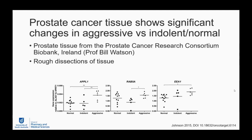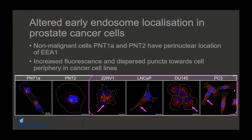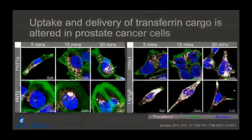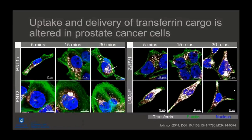We wanted to know what endosomal processes might be altered in prostate cancer that could affect pathogenesis. Much like lysosomes, early endosomes are also mispositioned — EEA1 shows perinuclear localization in non-malignant cells, while in cancer cells we see greater pericellular distribution of these compartments. Functionally, we measured differences using transferrin ligand uptake: in non-malignant cells, transferrin migrates to a perinuclear region within 30 minutes, whereas in cancer cells it remains dispersed throughout, particularly at the tips of the cells.